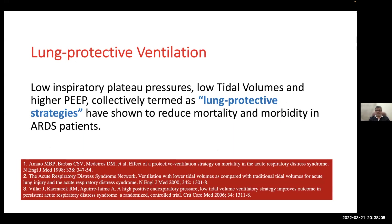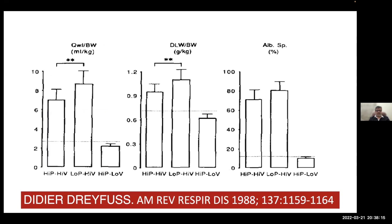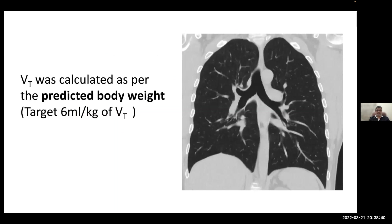We all know about lung-protective ventilation — keeping plateau pressures below 28 cmH₂O, low tidal volume, and high PEEP strategy. Dr. Dreyfuss suggested in 1988 that volutrauma was more harmful than barotrauma. In year 2000, the ARDSnet trial showed low tidal volume ventilation was safer than high tidal volume. Many may not be aware that adult ventilation was routinely using 15 mL/kg tidal volume in the 1995–96 era, before everybody started ventilating at 6 mL/kg of predicted body weight.